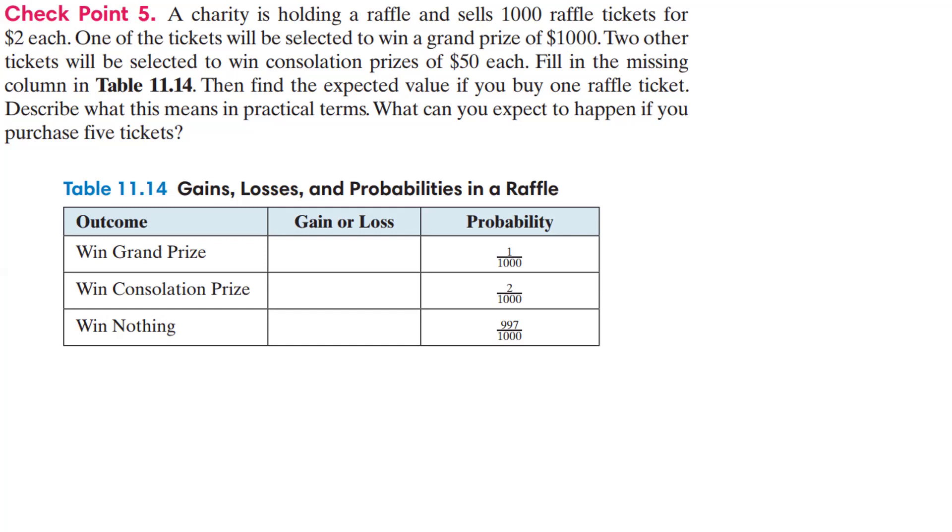Alright, so remember, if we purchase a ticket, what's going to happen? Well, we're going to basically lose two dollars if we win nothing. So we're going to lose $2 if we win nothing because you've paid it out. Now, if we win the consolation prize, you win 50, but you paid two, so you're only gaining 48.